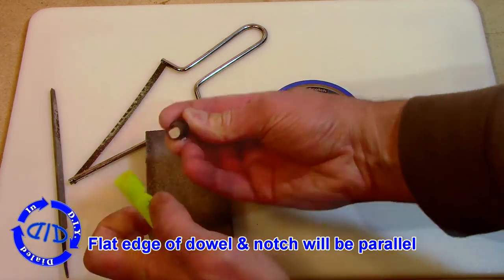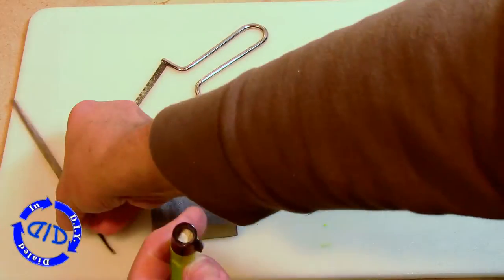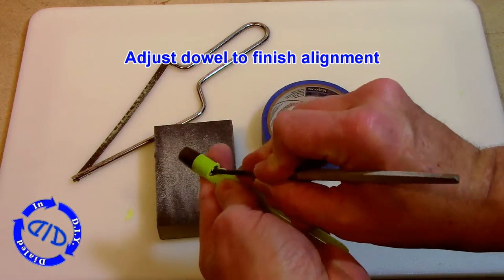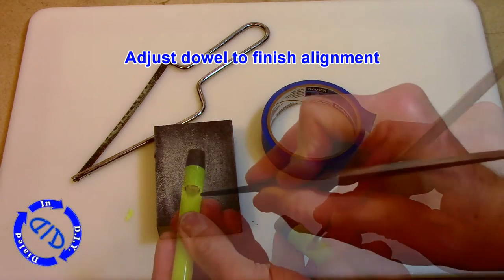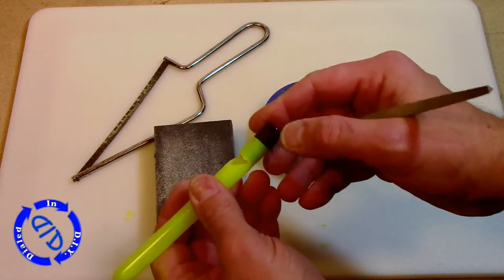Also, the flat edge of the dowel needs to be on top. That also is going to be parallel with the notch. Now I'm just pushing that piece of dowel back and forth till I get it just right and twisting it until it aligns just the way I want it to align.